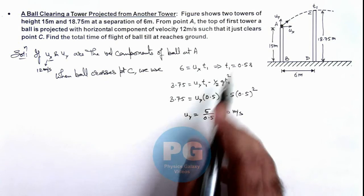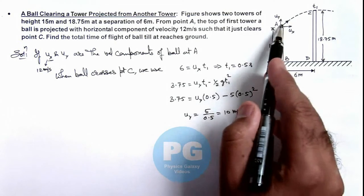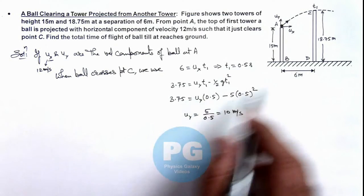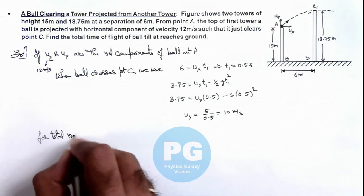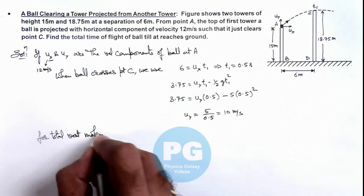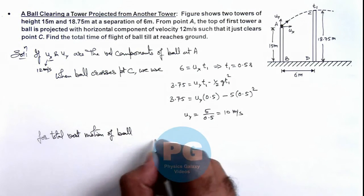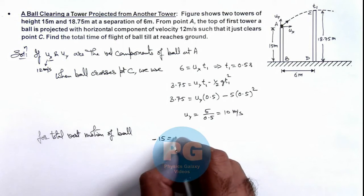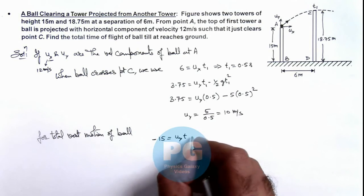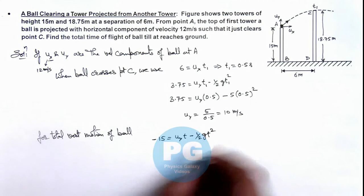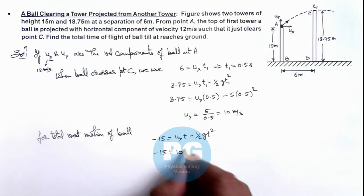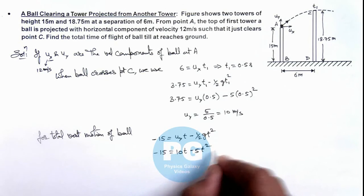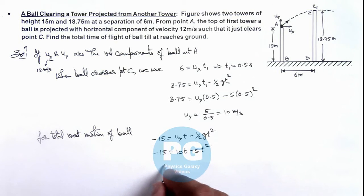So here we have got the value of ux as well as uy and this uy will help us in calculating the total time of flight of vertical motion of the ball. So we can write for total vertical motion of ball, minus 15 is equal to uy*t minus half g*t square. This will be the total time in which the ball will reach ground. So this can be given as minus 15 is 10t minus 5t square, or the quadratic can be further simplified as t square minus 2t minus 3 is equal to zero.